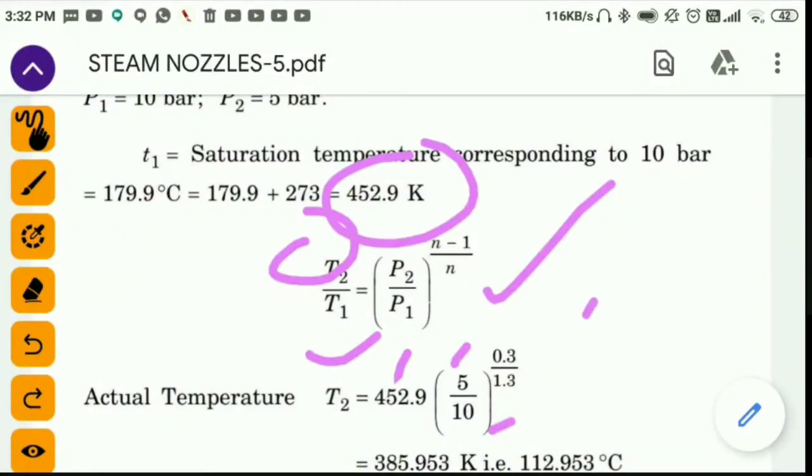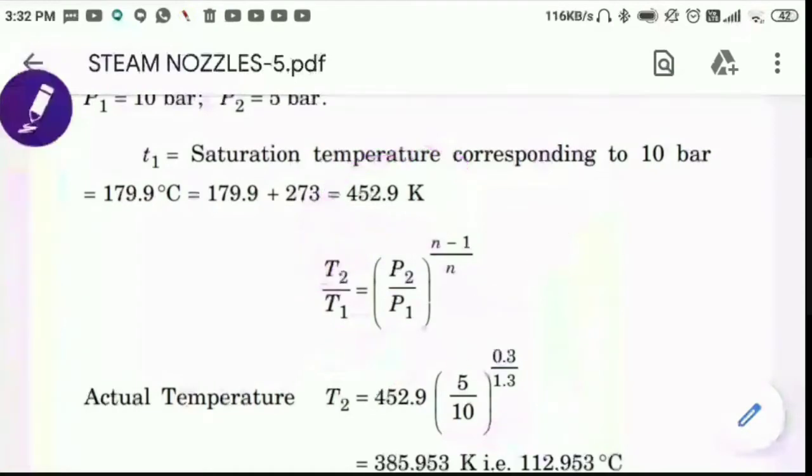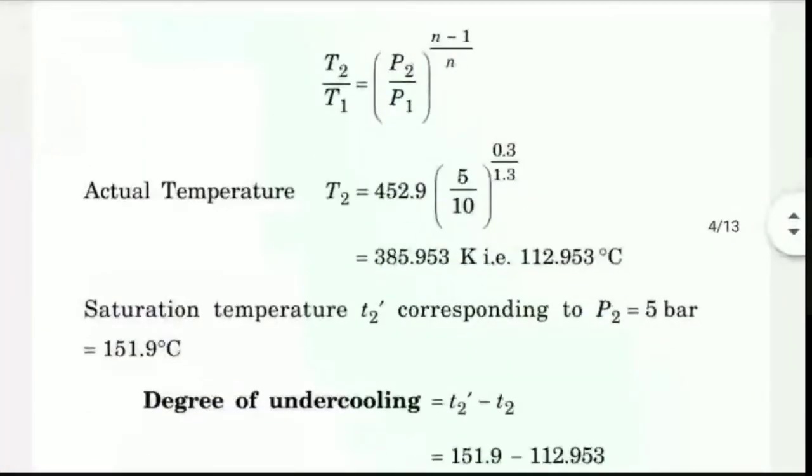At the exit, we got the value of 385 Kelvin. By subtracting 273, we get 112 degrees Celsius.